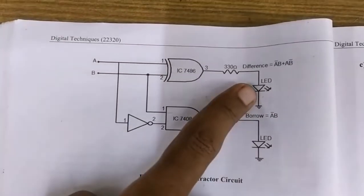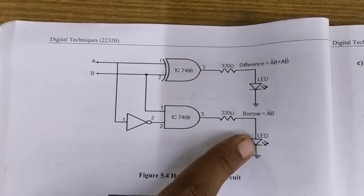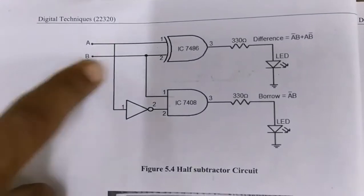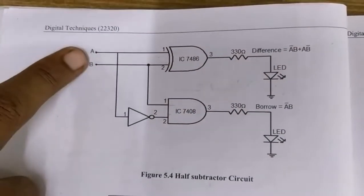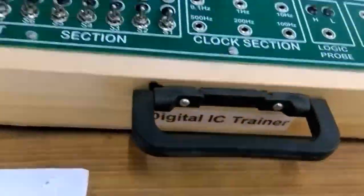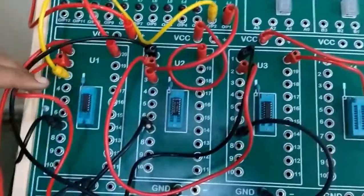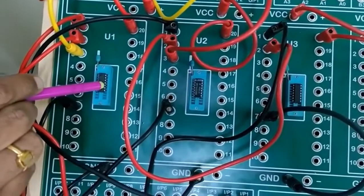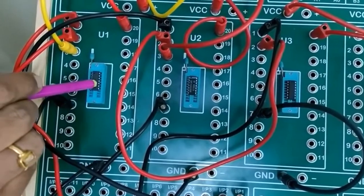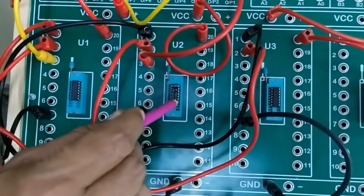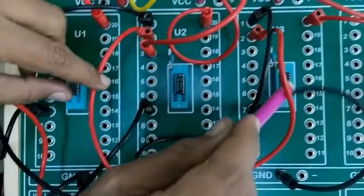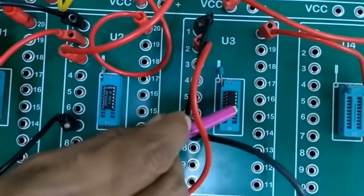The output will be indicated by LEDs, and the two inputs A and B are fed to the IC inputs using switches. These three ICs are: IC 7486, the XOR gate, which will generate the difference; IC 7408, the AND gate; and IC 7404, the NOT gate, which together will help generate the borrow.